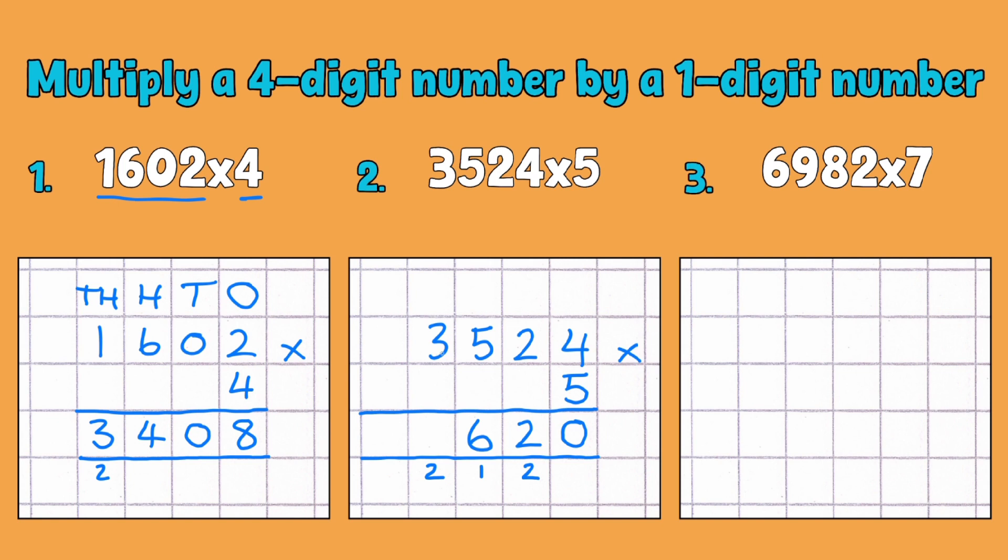And then finally for this one, I've got 3,000 multiplied by 5. So 3 times 5, just to make it easy for ourselves, which is 15, but not forgetting to add on my extra 2, or 2,000, down there. So that makes 17, or 17,000. That gives me an answer of 17,620.